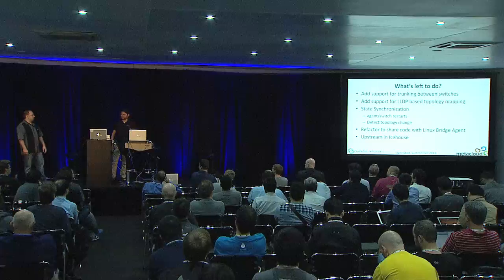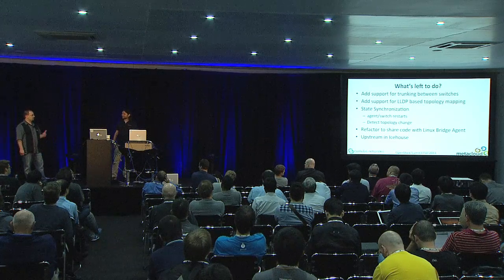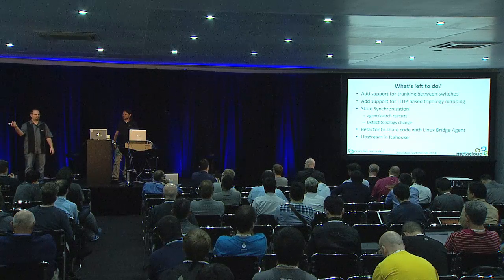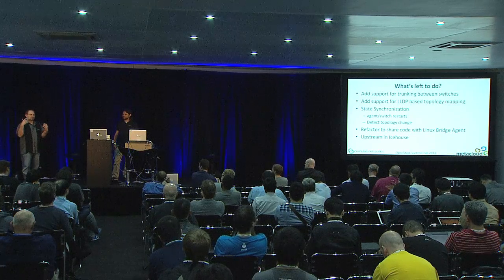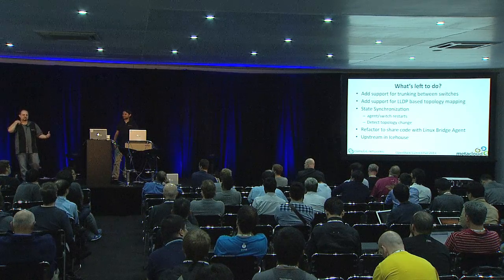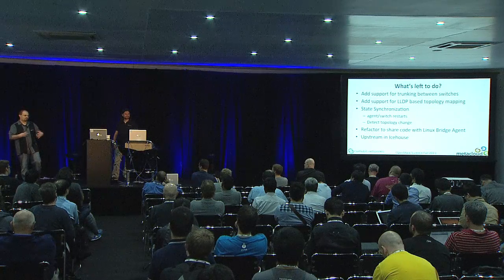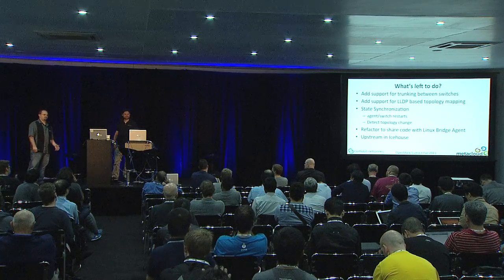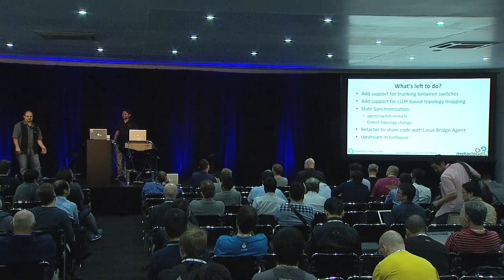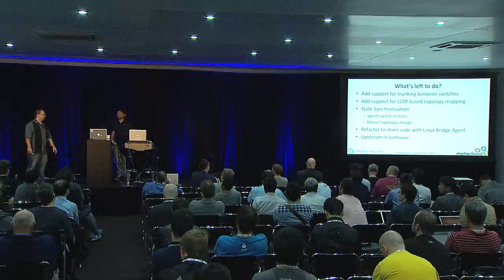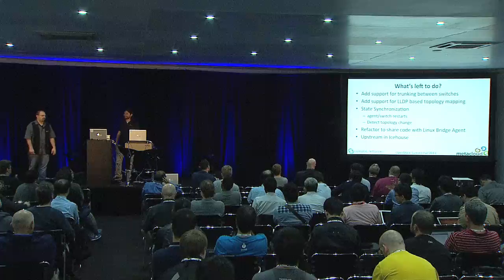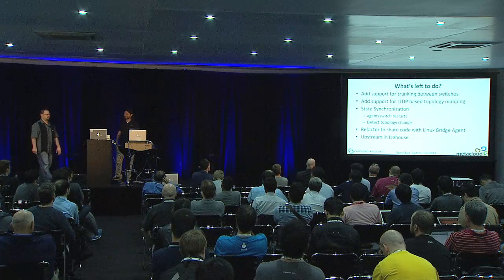There's still some state synchronization we want to do, specifically around detecting topology changes. We want to leverage LLDP so that if you move a host to another switch or need to replace a switch or change trunk ports, you can just do that, start the agent, and it'll detect and reconfigure the network for you. The other big thing is to refactor the agent to share code with the Linux bridge agent — the Linux switch agent probably uses 75% of the code from the Linux bridge agent, so abstracting that into a shared library would benefit both. And finally, we want to finish it up and get it upstreamed into the Icehouse release so it'll be an official part of OpenStack.